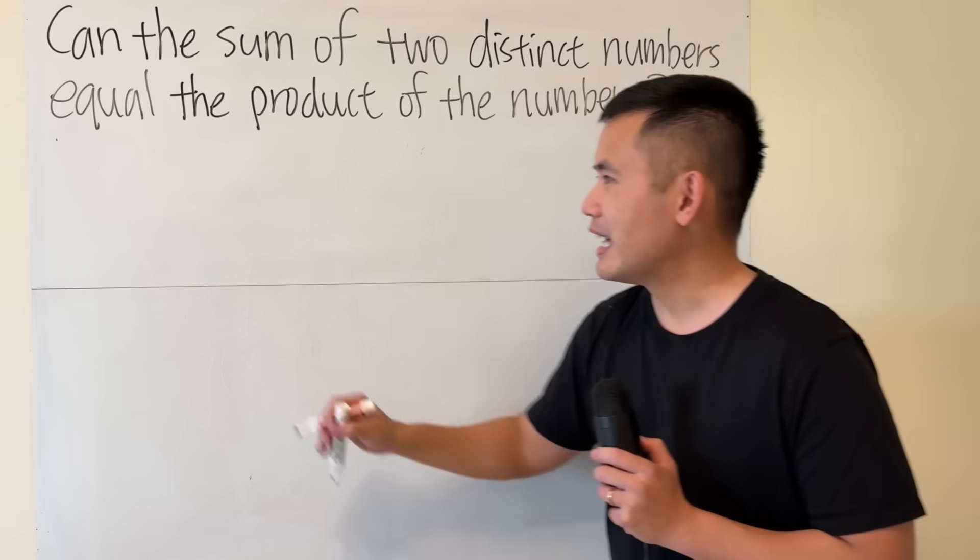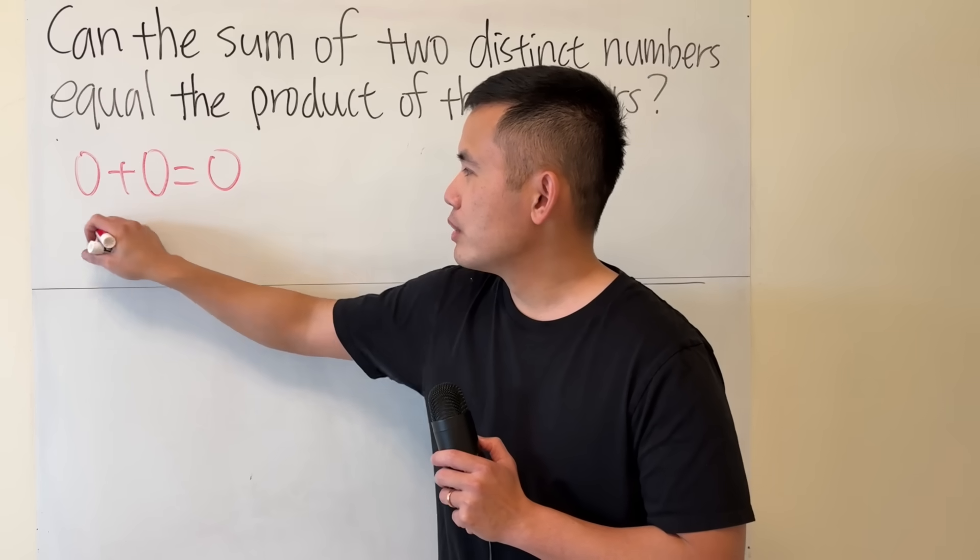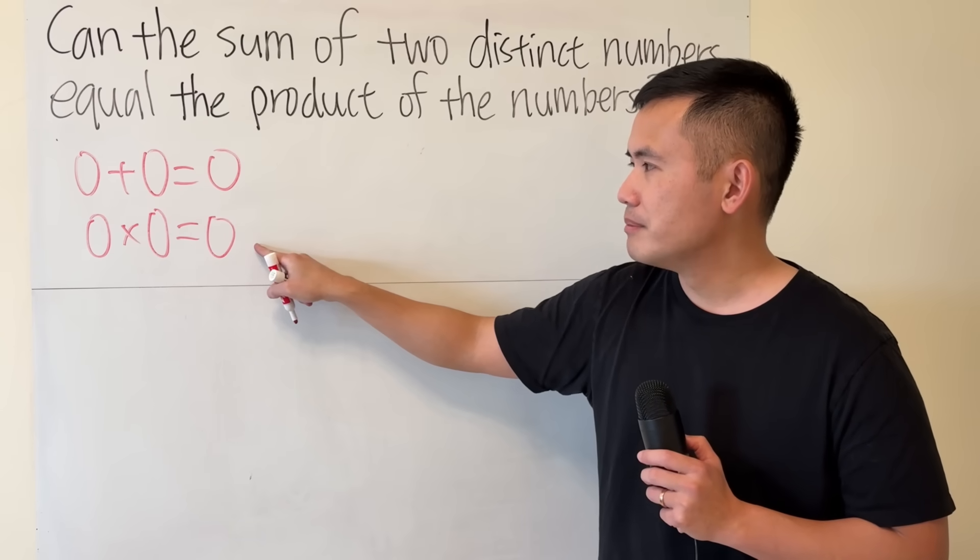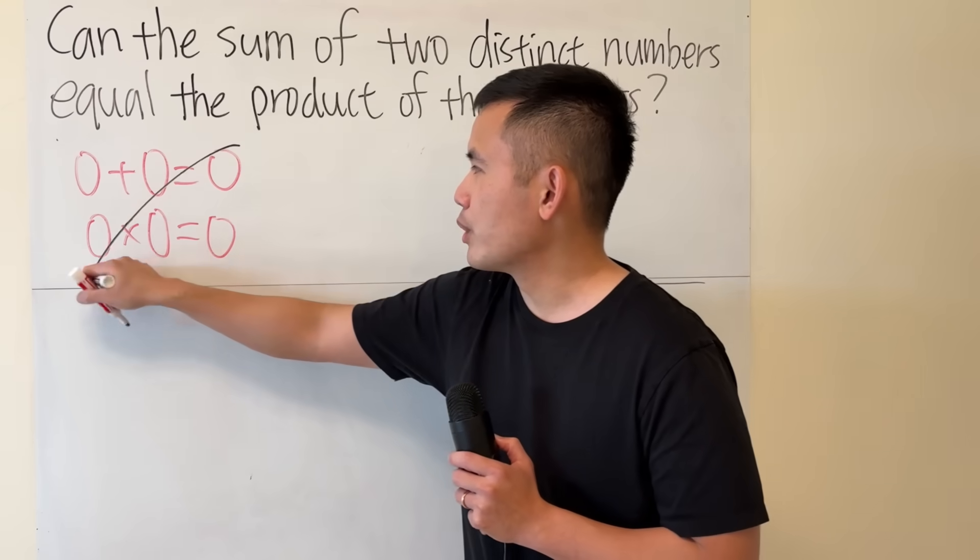This is kind of weird, because we know that 0 plus 0 is 0, and 0 times 0 is 0. The sum equals the product, but 0 equals 0. We want two different numbers, so this is not what we want.